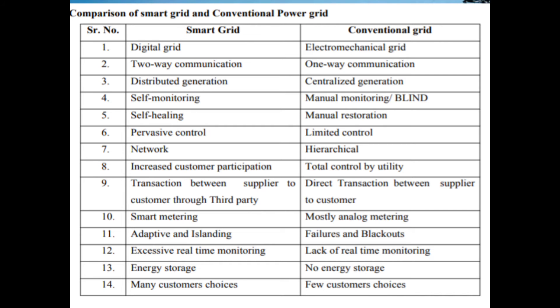Smart grid is self-monitoring using sensors, while conventional grid uses manual monitoring. Smart grid is self-healing, whereas conventional grid requires manual restoration. Smart grid offers pervasive control, while conventional grid has limited control. Smart grid is networked and hierarchical with increased customer participation, whereas conventional grid gives total control to the utility. In smart grid, transactions between supplier and customer go through a third party, but in conventional grid there is a direct transaction.